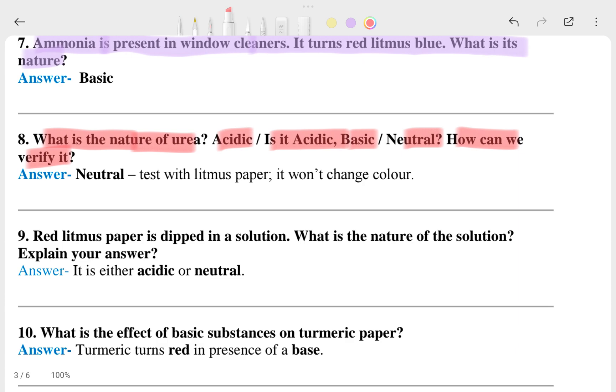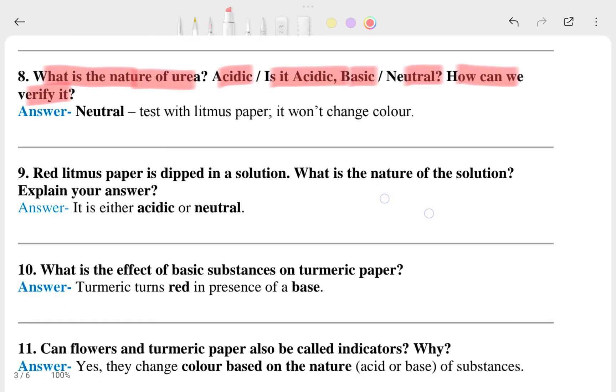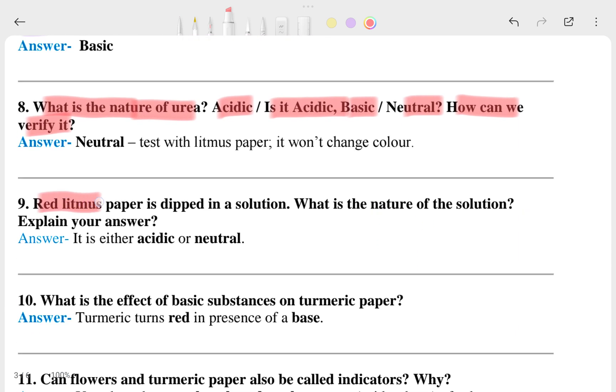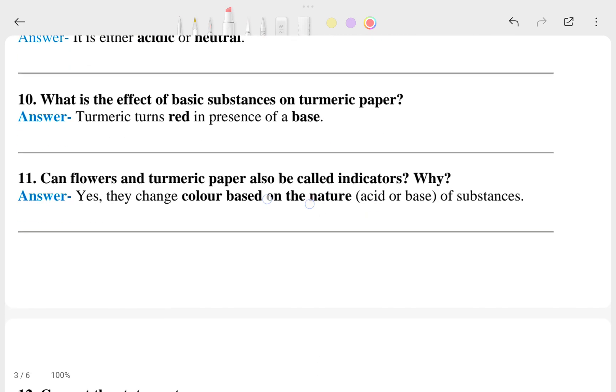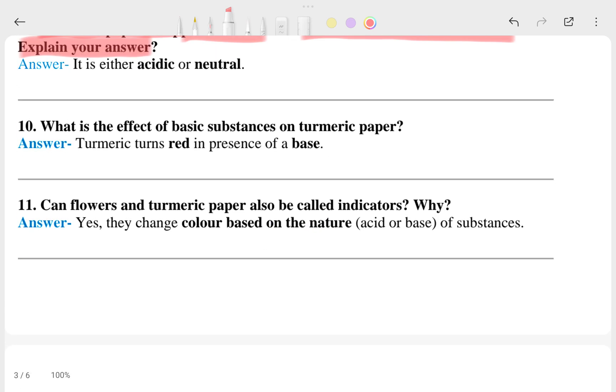Ninth question: red litmus paper is dipped in a solution. What is the nature of the solution? Explain your answer. Is it either acidic or neutral? Tenth question: what is the effect of basic substances on turmeric paper?